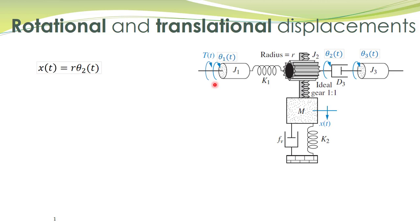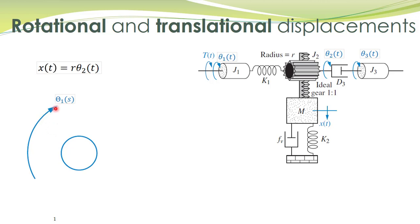The easiest approach to write the mathematical model for this system is to first draw free body diagrams corresponding to each of these displacements. Once we have these free body diagrams, we can easily write the torque balance equations and force balance equations. Let's start with the first displacement theta1(t) and draw the free body diagram. Looking at this arrangement from the right, the torque T(t) produces an angular displacement theta1(t) in the clockwise direction, shown in this diagram. Now theta1(s) is theta1 written in the Laplace domain, and the applied torque is T(s).